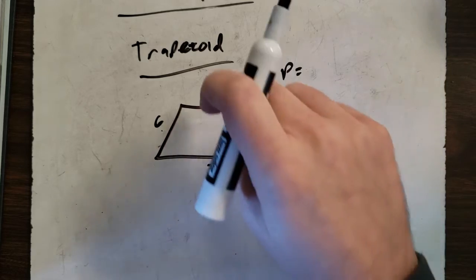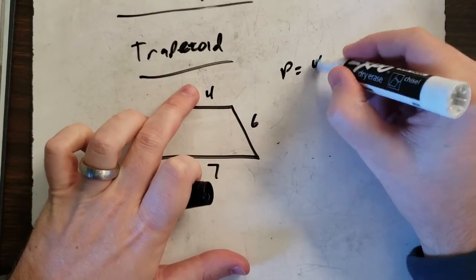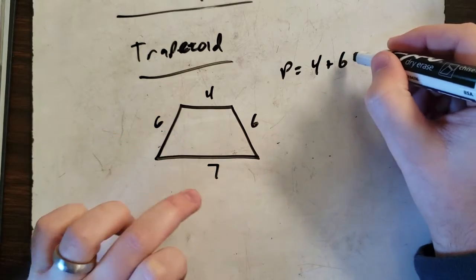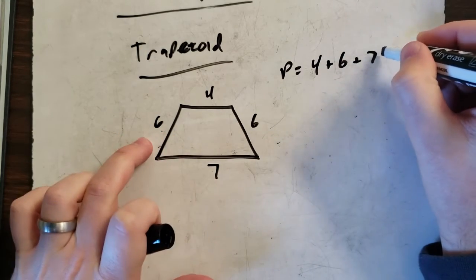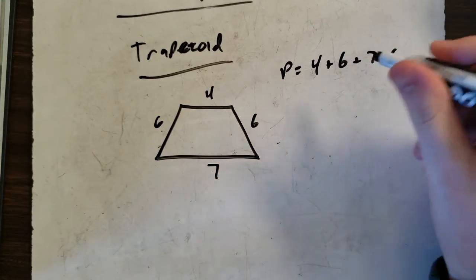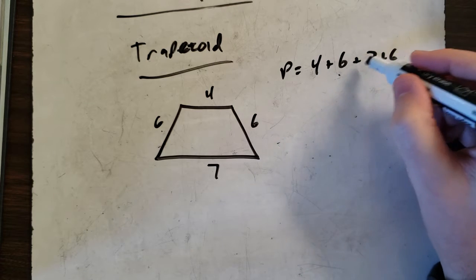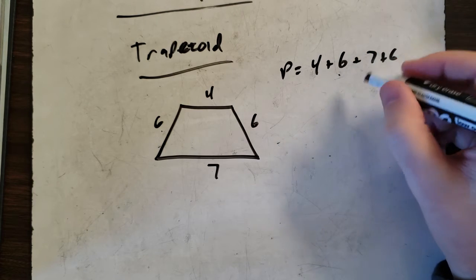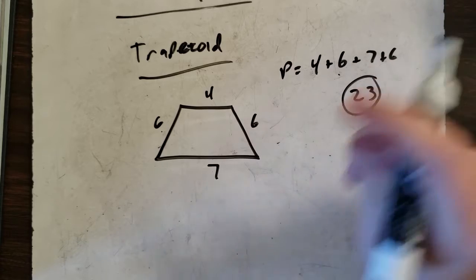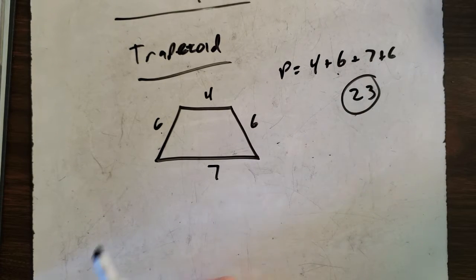So all we're doing is add up the sides. 4 plus 6 plus 7 plus 6. 4 plus 6 is 10, plus 7 is 17, plus 6 is 23. Simple as that, adding the outsides.